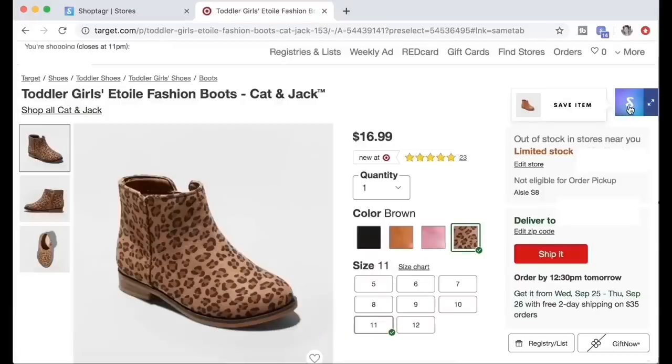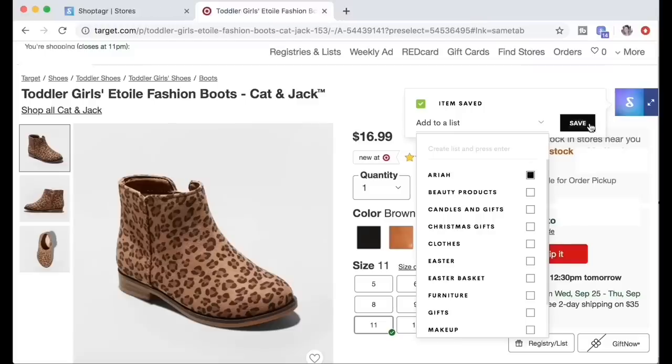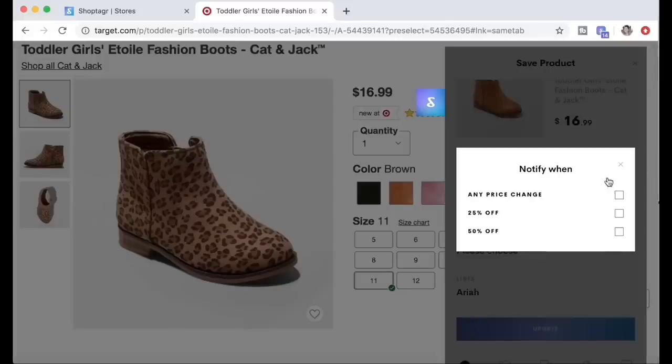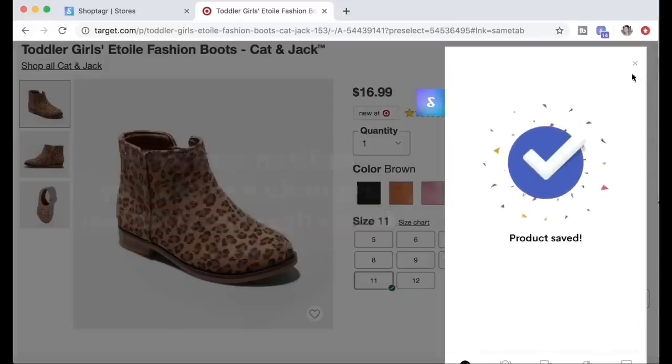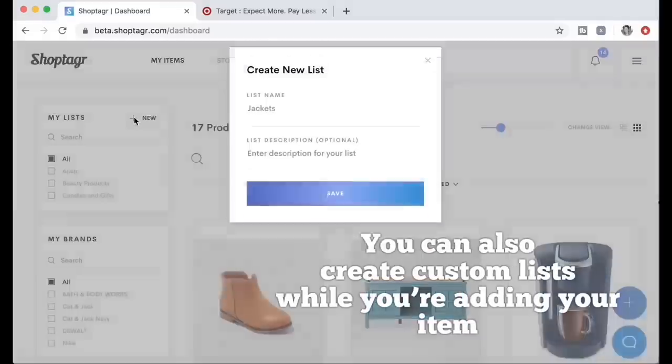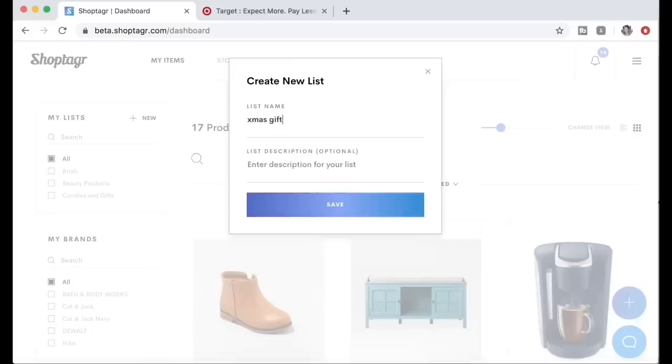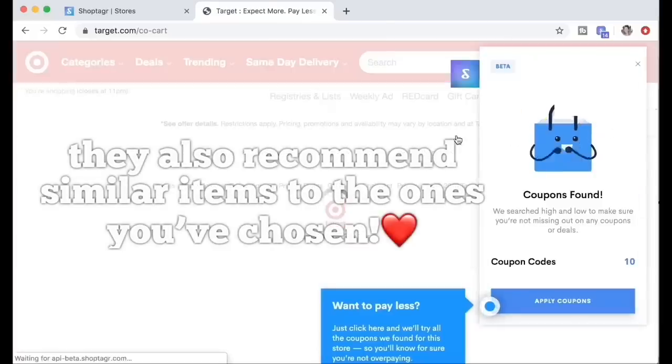Once you find an item that you like, this little Shop Tagger option is going to pop up and let you save it to any list that you've created. You can always pick when it notifies you. I usually ask for any price change and it notifies me immediately through email or text. To create a list it's really simple, just click new and type your list. It is shareable.